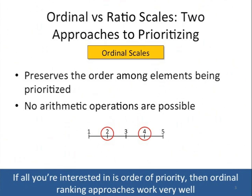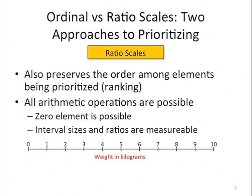So the bottom line is: if all you're interested in is the order of priority, and you don't really care about how much more important something is than another, then an ordinal ranking approach works very well. But if you are concerned about relative importance — in terms of how much more important one item is — then you need to be using a ratio scale.